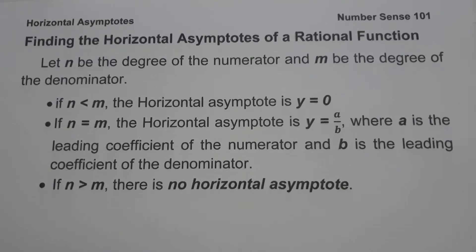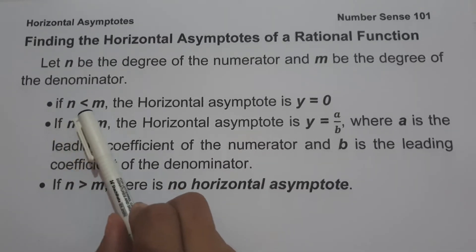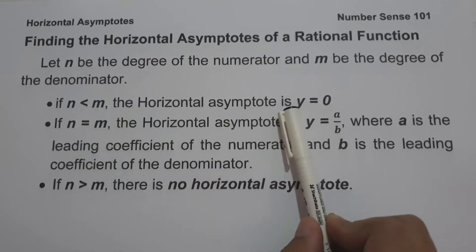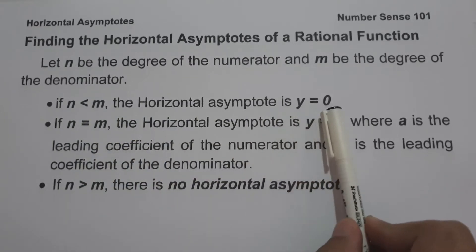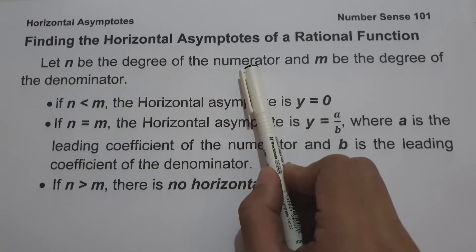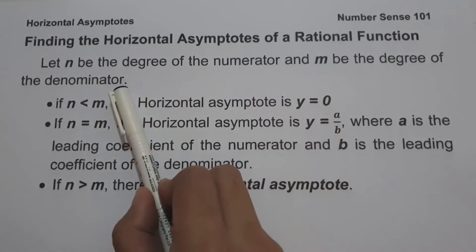In finding the horizontal asymptotes of a rational function, there are three conditions to remember. The first one: if n is less than m, the horizontal asymptote is y equals zero, where n is the degree of the numerator and m is the degree of the denominator.